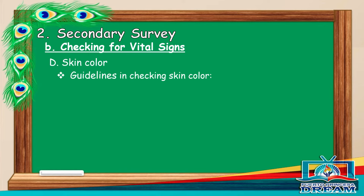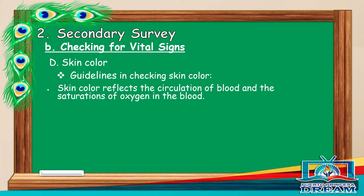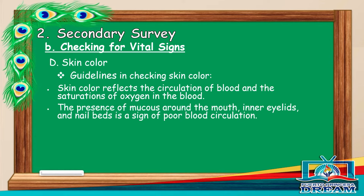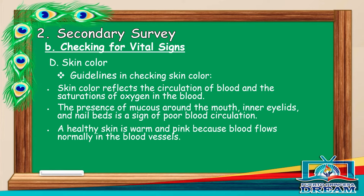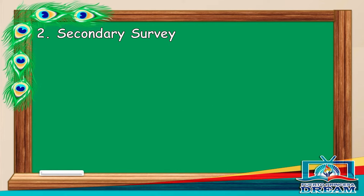Skin color. Guidelines in checking skin color: skin color reflects the circulation of blood and the saturation of oxygen in the blood. The presence of mucus around the mouth, inner eyelids, and nail beds is a sign of poor blood circulation. A healthy skin is warm and pink because blood flows normally in the blood vessels.